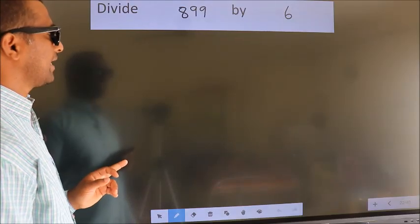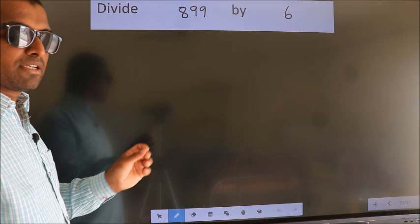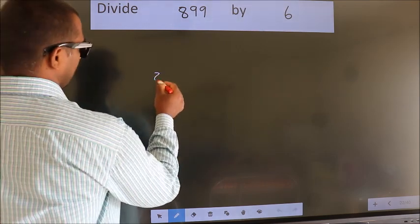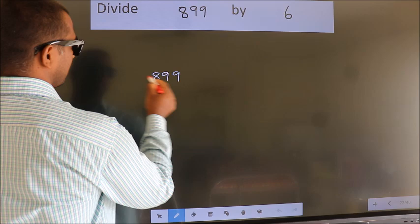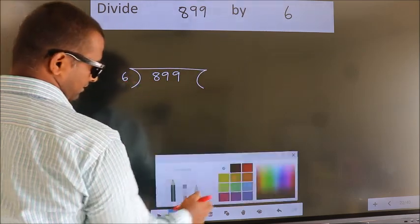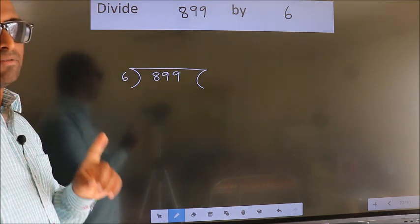Divide 899 by 6. To do this division, we should frame it in this way. 899 here, 6 here. This is your step 1.